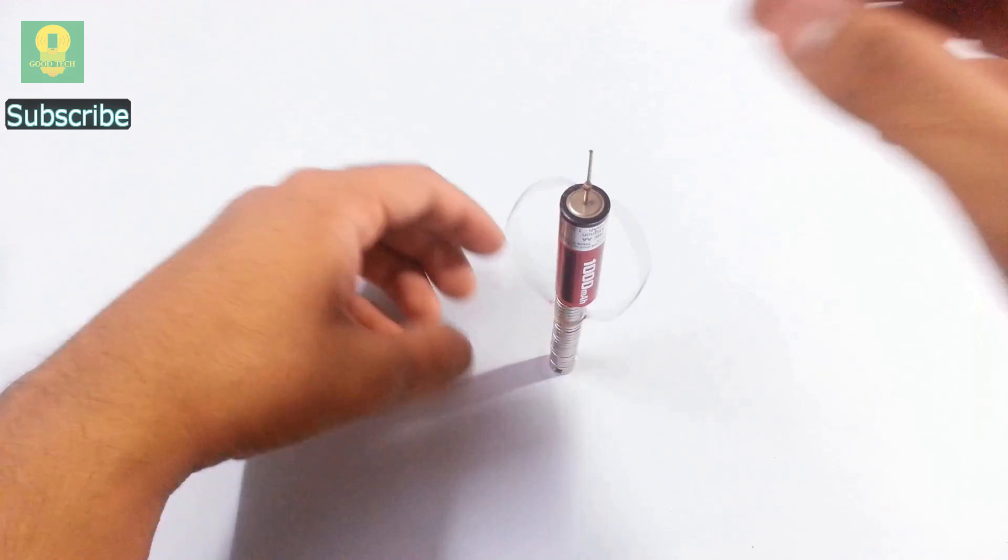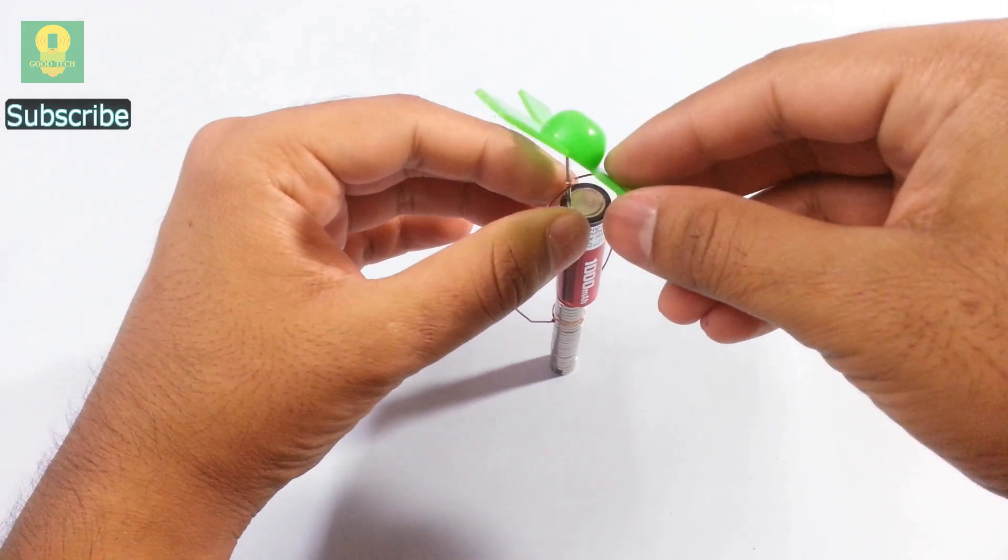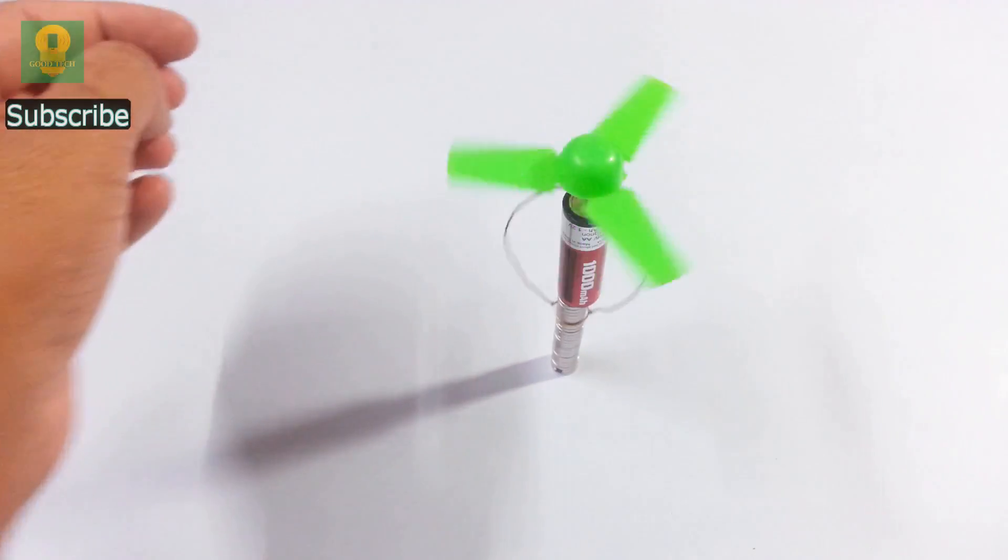We see that the coil starts to rotate. If we now place a fan over the pin, we get a nice rotating fan.